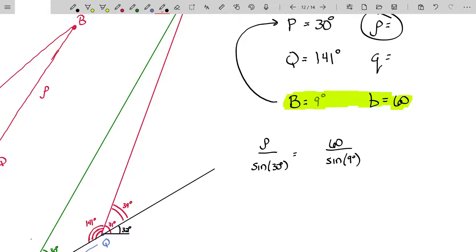Notice I'm not finding an angle with the law of sines, so there will not be an ambiguity. P is to the sine of its opposite angle, 30 degrees, as B, which is 60, is to the sine of its opposite angle, which is 9 degrees. We know what sine of 30 degrees is. It's a half. But the reality is we're going to grab a calculator no matter what. 60 sine of 30 degrees divided by the sine of 9 degrees gives me 191.8.